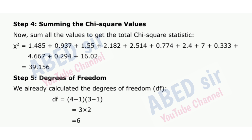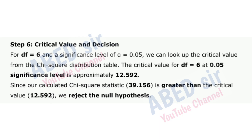Step 4: Summing the chi-square values. Sum all the values to get the total chi-square statistic: χ² = 39.156. Step 5: Degrees of freedom. Df = 6. Step 6: Critical value and decision. For Df = 6 and a significance level of α = 0.05, we look up the critical value from the chi-square distribution table. The critical value is approximately 12.592. Since our calculated chi-square statistic 39.156 is greater than the critical value 12.592, we reject the null hypothesis.